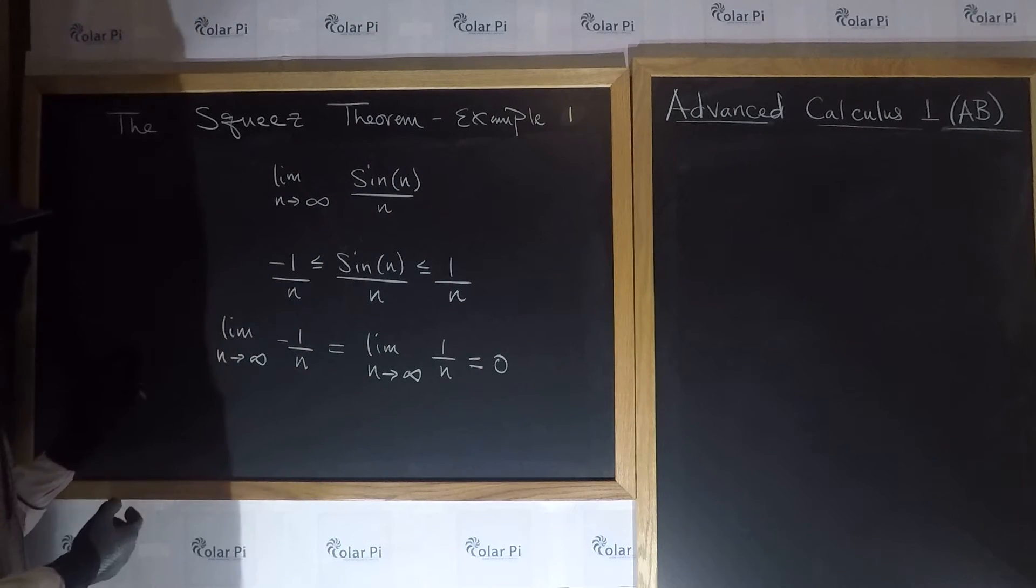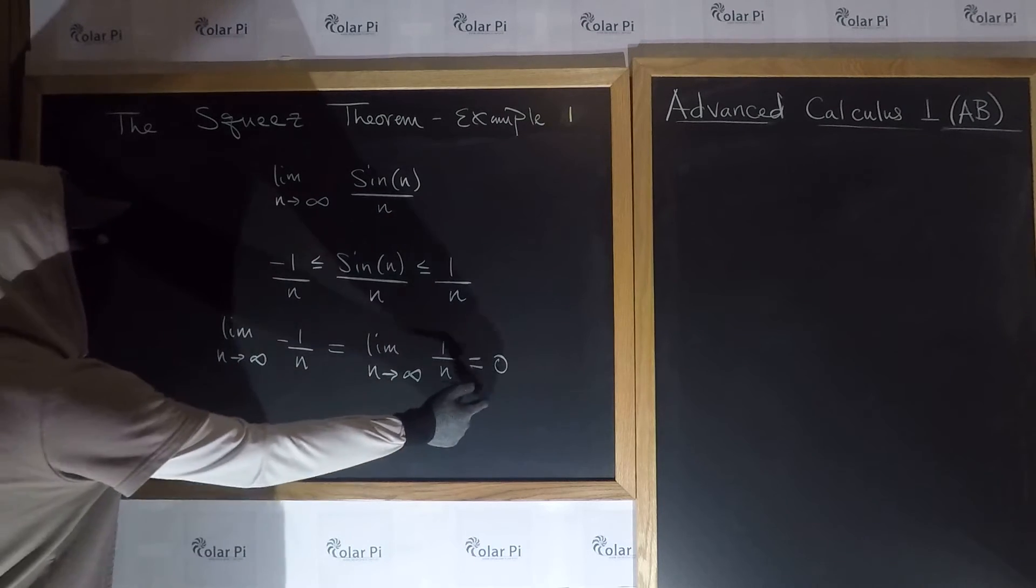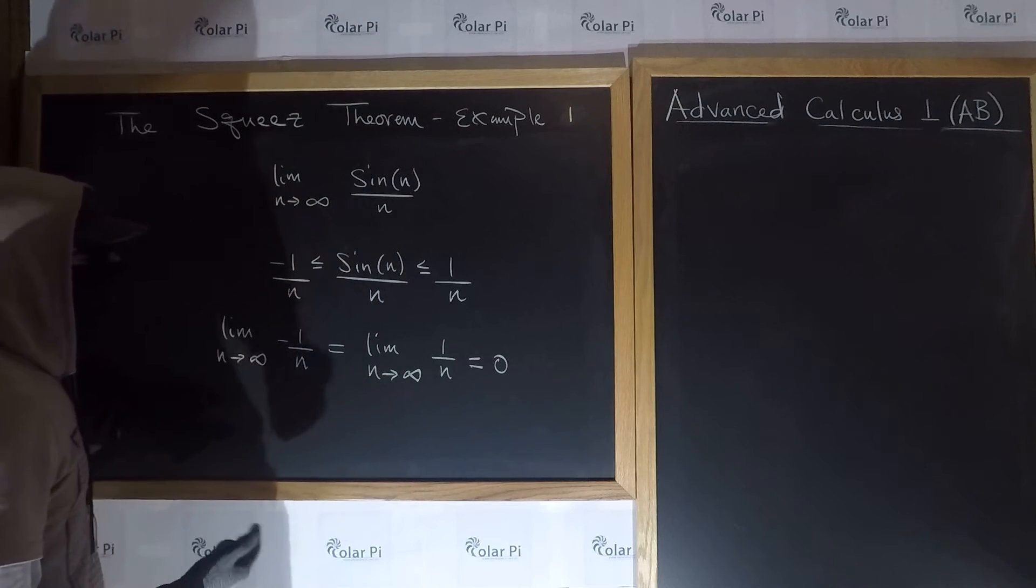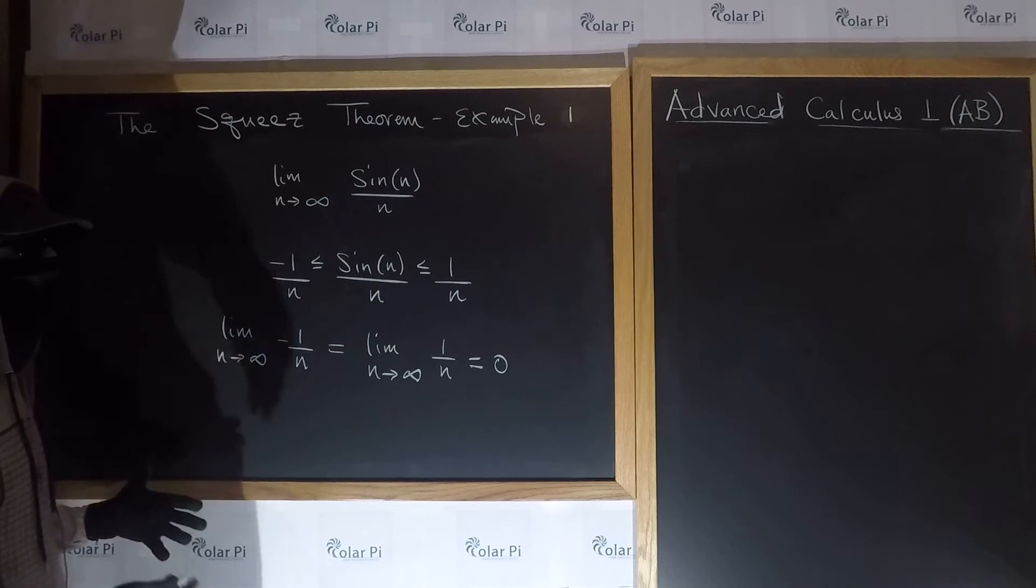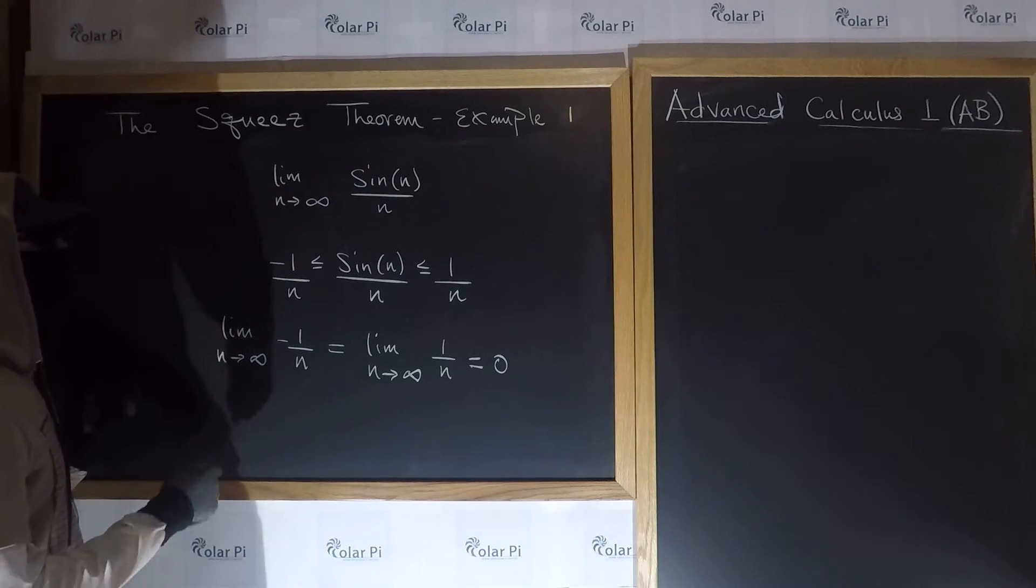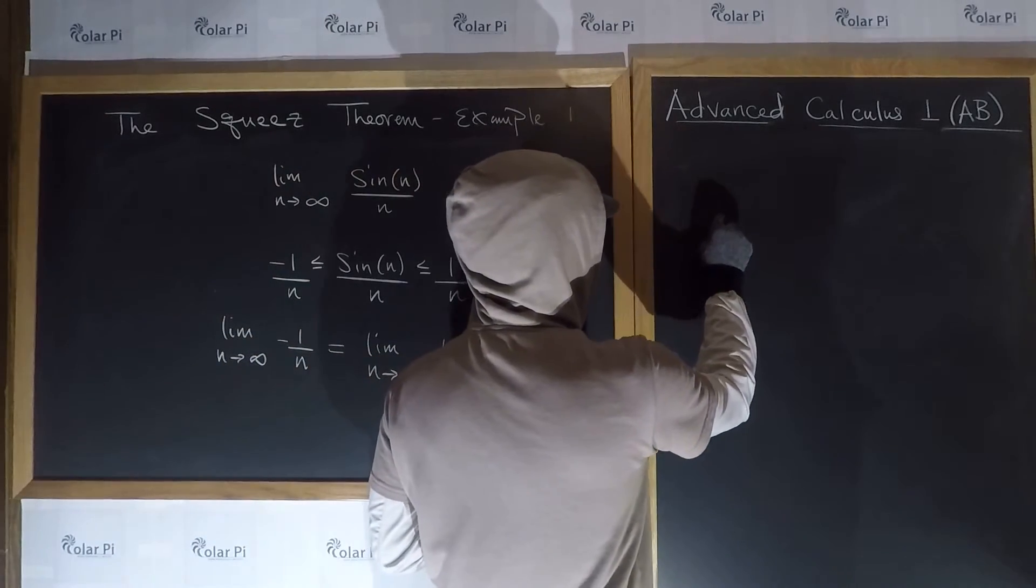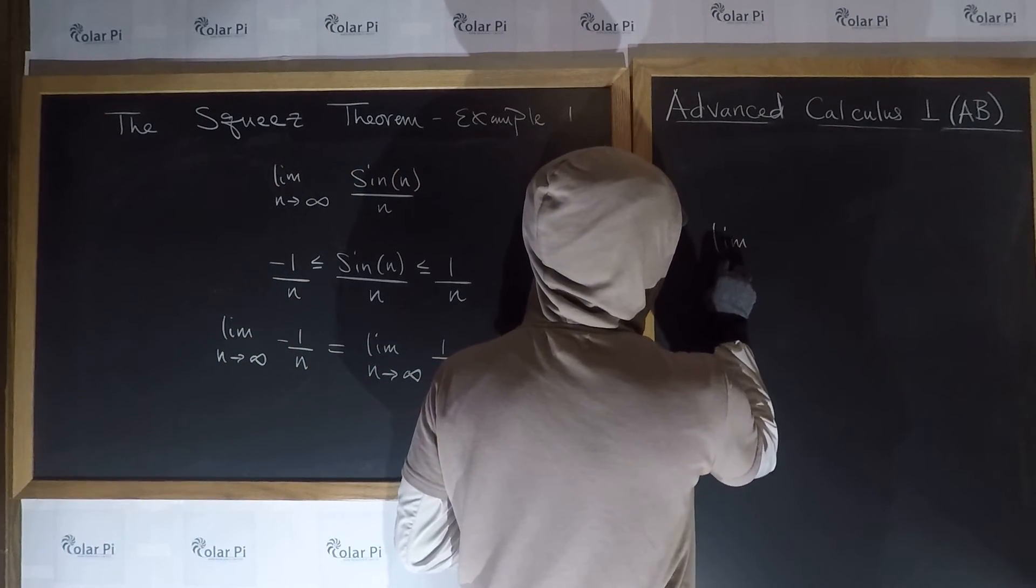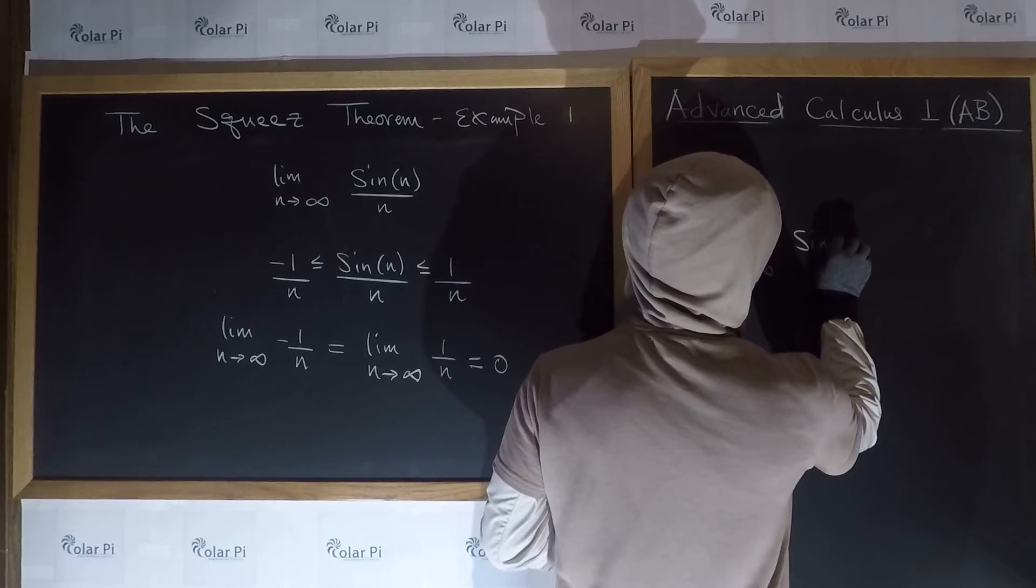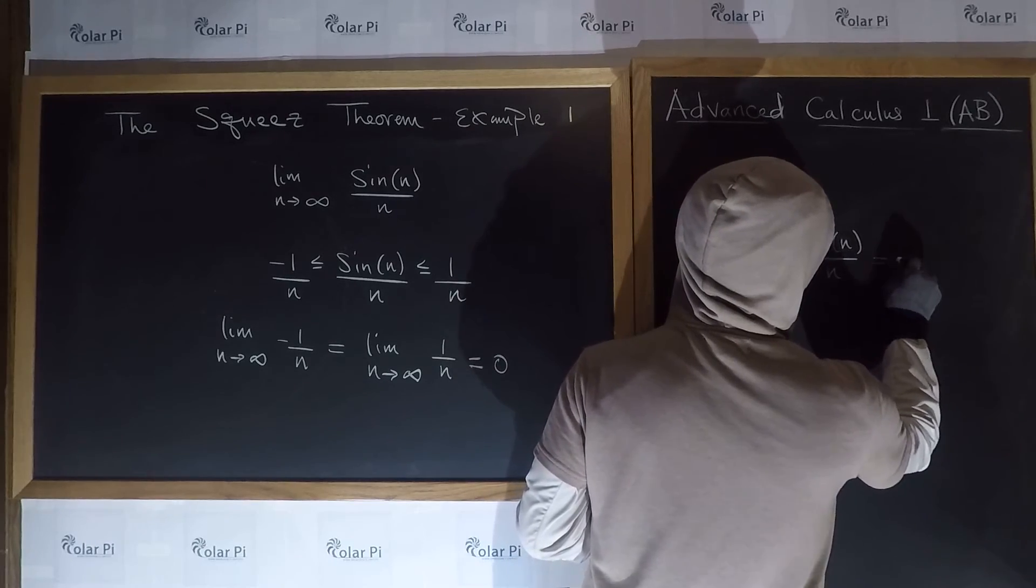So we see that the limit as n goes to infinity of negative 1 over n is 0, and the limit as n goes to infinity of 1 over n is also 0. And therefore, by the squeeze theorem, if you haven't watched example 0, watch example 0. But yeah, by the squeeze theorem, we conclude that the limit as n goes to infinity of sine n over n is equal to 0.